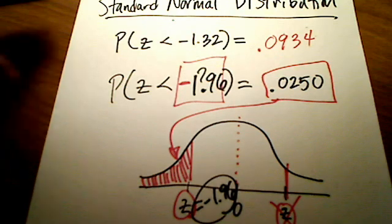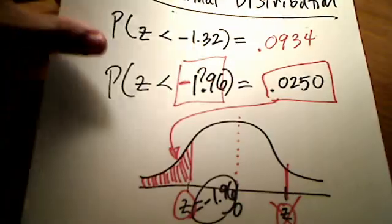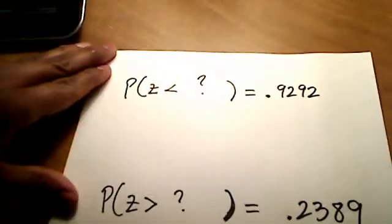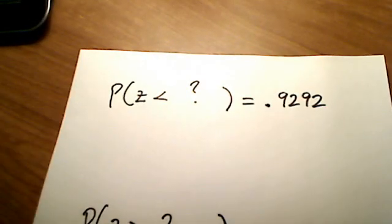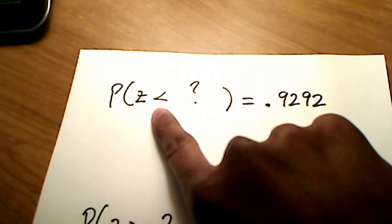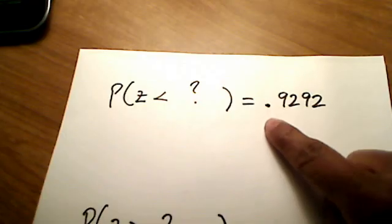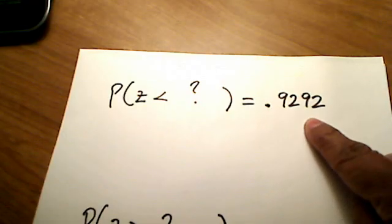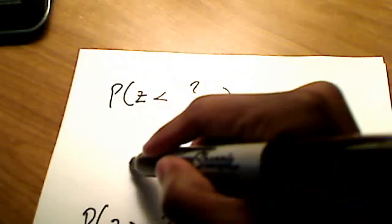Let's try some other problems like this one. I've got three more and then we'll call it quits in this video. Take a look at this first one. Do you notice that this is a less than symbol? So I'm shading to the left and I'm trying to find an area of .9292.